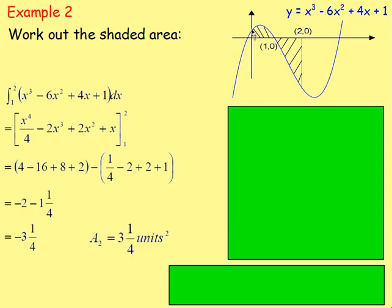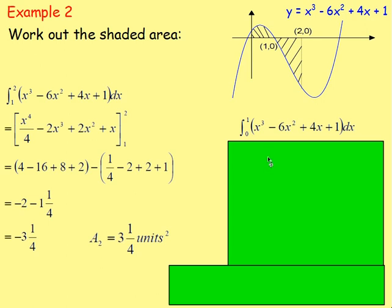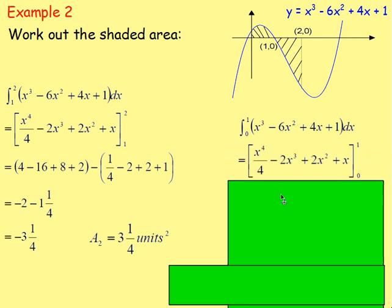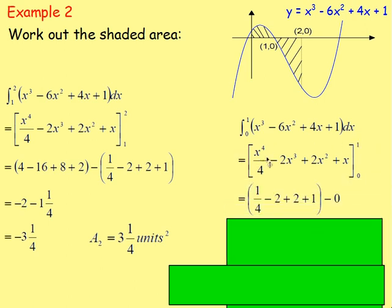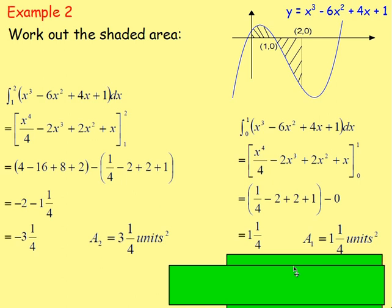Work out the other area — the area above the x-axis, between 1 and 0. Integrating our function using limits 1 and 0, we get x to the power of 4 over 4, minus 2x cubed, plus 2x squared, plus x. Sub in 1 in place of x, then minus, sub in 0 in place of x. If you sub in 0, you just get 0. Be careful though — if you have, say, a plus 7 at the end, it will not give you 0, so always check. You end up with 1 and a quarter, so the area is 1 and a quarter.